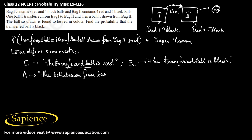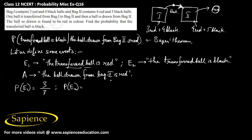First we find the probability of E1 — the probability that the transferred ball is red. There are three red balls out of seven balls in bag one, so P(E1) = 3/7. Similarly, the probability of E2 — the transferred ball is black — is 4/7, since there are four black balls out of seven in bag one.